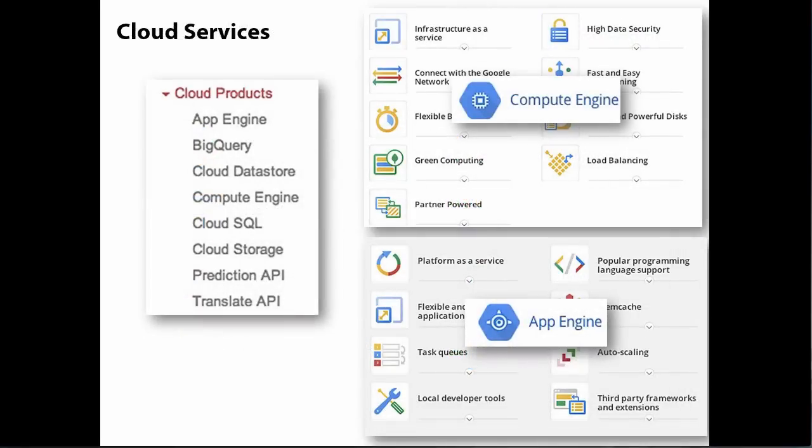If you put Compute Engine and App Engine together, there are a core set of services you can think of in layers — these are the most commonly used. They mostly have to do with data. There's a service called BigQuery, which is query as a service — super powerful, astoundingly fast, a new paradigm. Then there's Cloud Datastore, Cloud SQL, Cloud Storage — different data options — and then the uniquely powerful Prediction API and Translate API. So this gets us started thinking about the services.